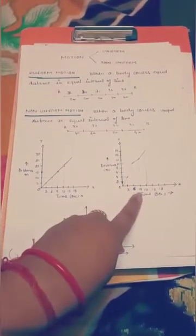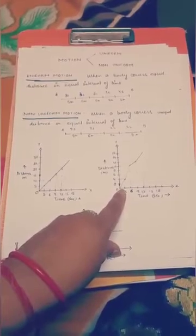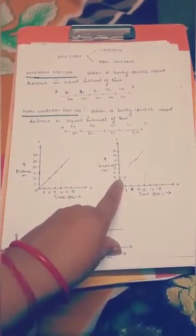Now, if you draw a graph for a non-uniform motion, I have taken the time to be of uniform intervals, three second, nine, 12 like that. Distance also to two meters I have taken. In the first three seconds, the body is covering four meters.